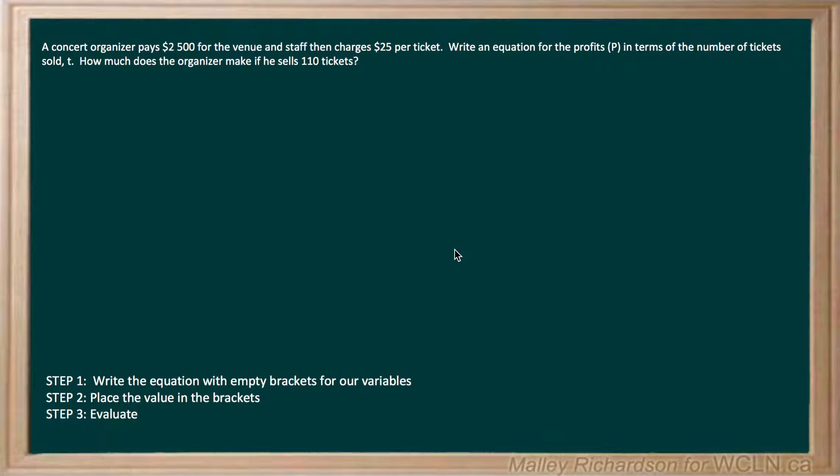A concert organizer pays $2,500 for the venue and staff, then charges $25 per ticket. Write an equation for the profits P in terms of the number of tickets sold T. How much does the organizer make if he sells 110 tickets?